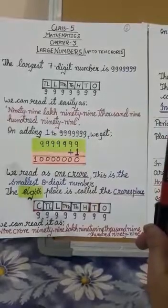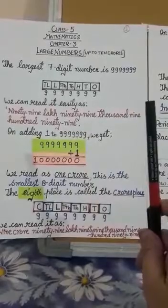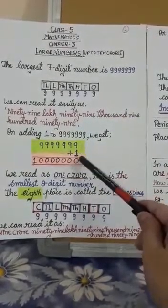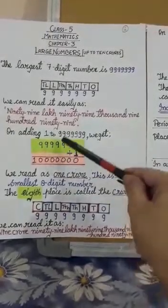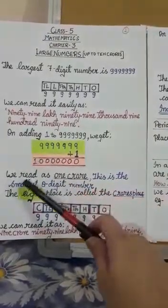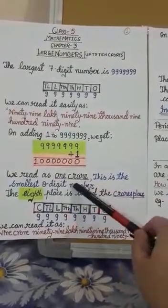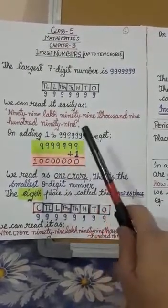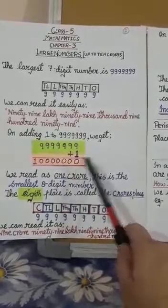That was the largest seven-digit number. On adding one to this number: nine plus one gives zero with one carry, and all the other nines become zero, giving us one followed by seven zeros. We read this number as one crore. So this is the smallest eight-digit number.